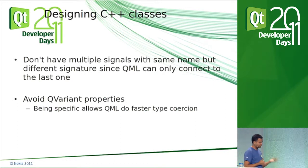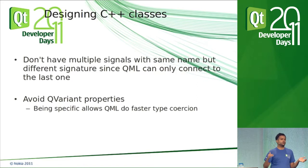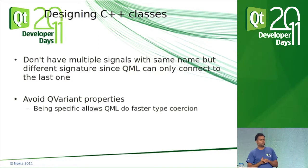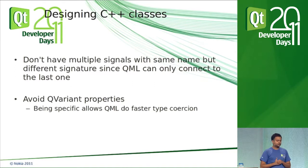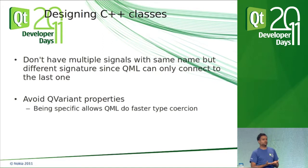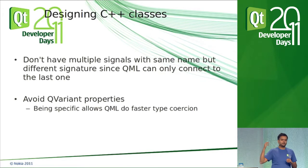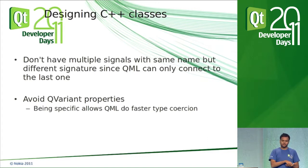One pitfall to be aware of: if you have multiple signals of the same name in C++, QML can only connect to the last defined one. The way to handle this is to rename them. You should also avoid QVariant properties. QML is a type-safe language, so you get a performance benefit by letting QML know the specific type of each property. If you know your type is a string, declare it as a QString property. The QML engine tries to do a lot of magic conversion from strings and other types into QVariant, and that code path is really slow.